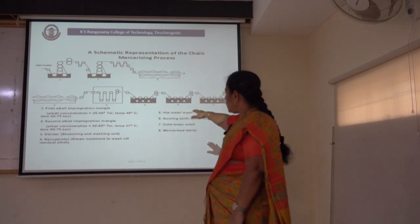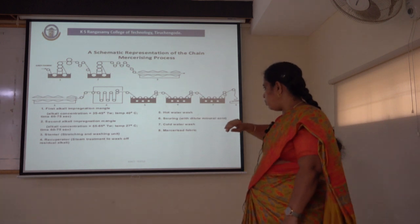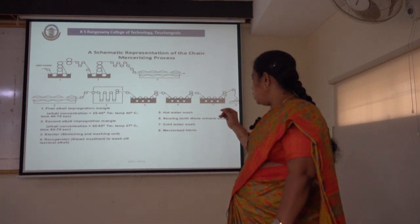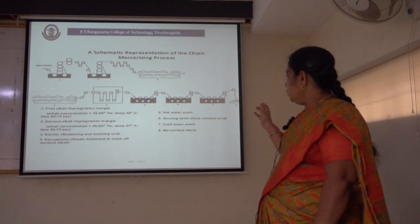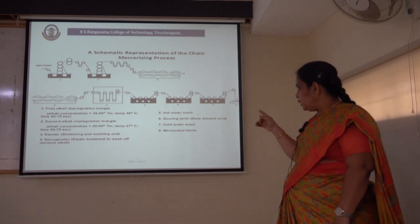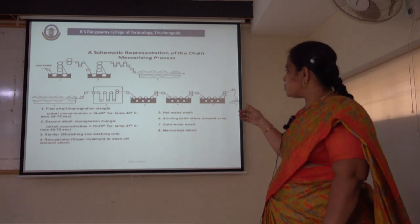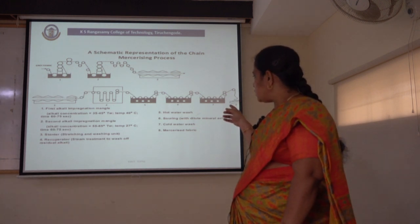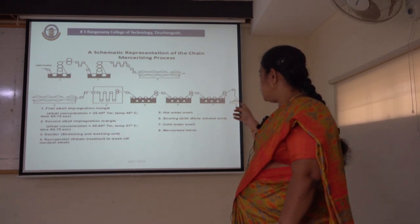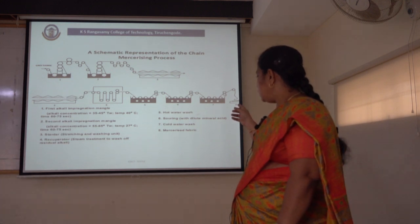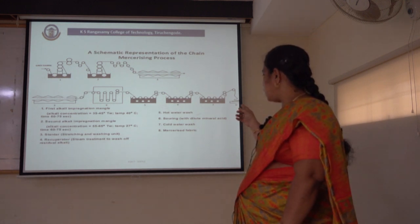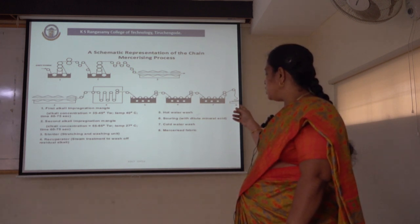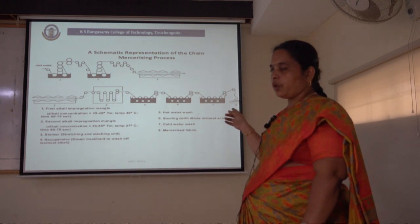After that, the fabric is taken to hot water wash, then the souring process, cold water wash, and finally we obtain the mercerized fabric. Souring is the treatment of the mercerized fabric with dilute mineral acid — especially dilute sulphuric acid or hydrochloric acid. This neutralization process is called the souring process.